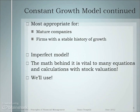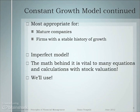The Gordon Growth Model is most appropriate for mature companies — companies that have been around a while and are essentially mature, like Dow Jones industrial-type companies. It works for firms with a stable history of growth, because it's expected they would have stable future growth. It is imperfect, but the math behind the model is useful and we use it across finance. We'll also do non-constant growth in another screencast. Know that there are other ways to value stock, but this is the model we're going to use in this class.